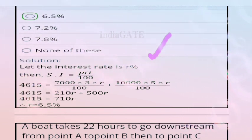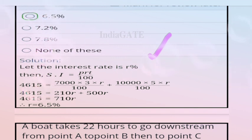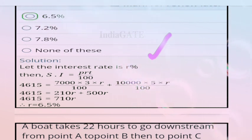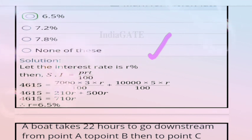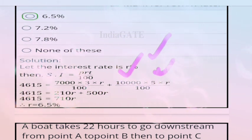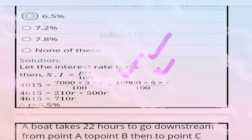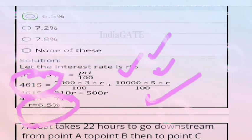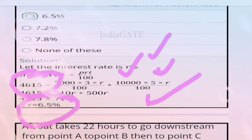Solution: using SI = PRT/100. First loan: 700 × 3 × r / 100. Second loan: 3000 × 5 × r / 100. Total SI = 4615. Solving: 2100r/100 + 15000r/100 = 4615, giving 17100r = 461500, so r = 6.5%. Correct answer is 6.5%.